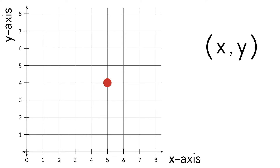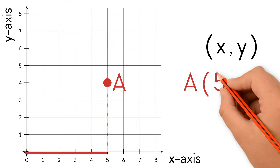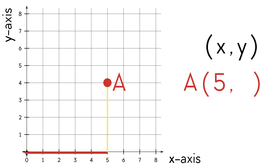We want to find point A. First, we find the x-coordinate. We look below at the x-axis to find the point's horizontal distance from zero, so our x-coordinate is 5. Now we find the y-coordinate, which is the vertical distance from zero. We look to the left at the y-axis and the y-coordinate is 4. So the ordered pair A is (5, 4).